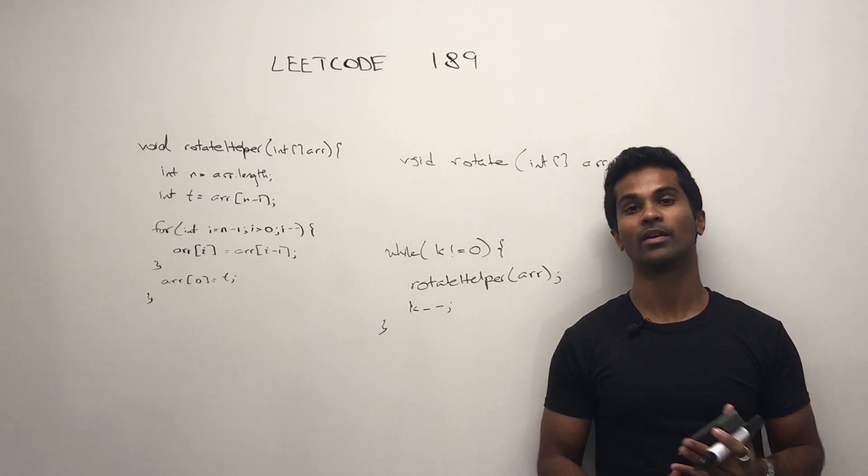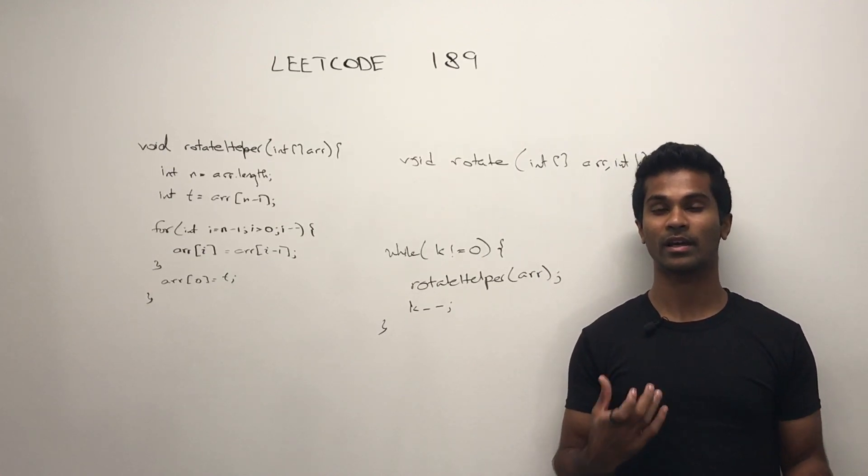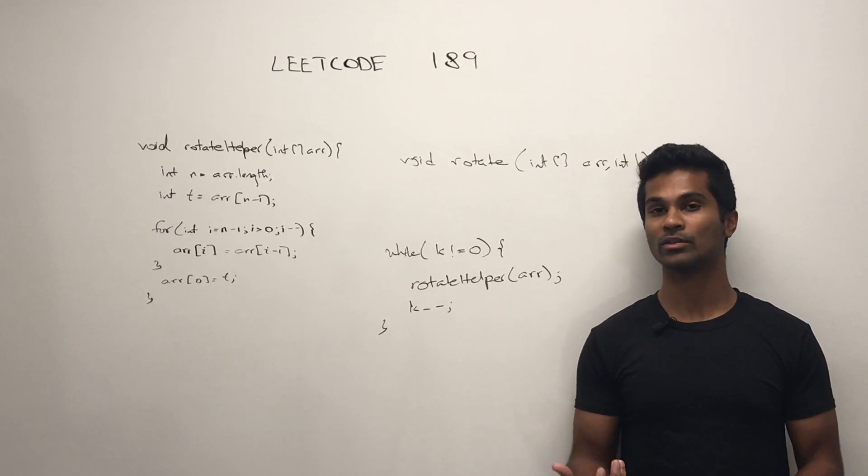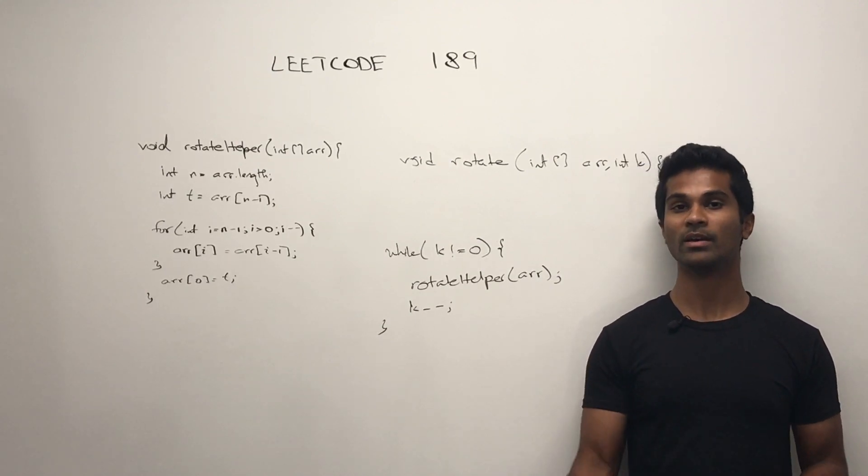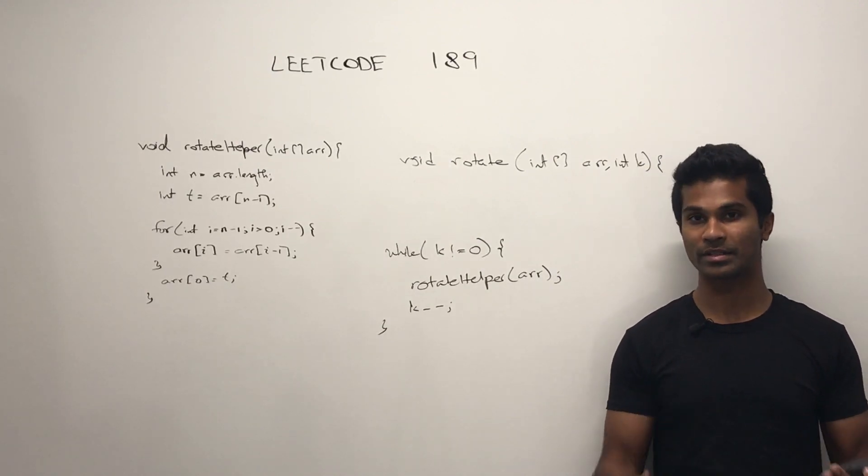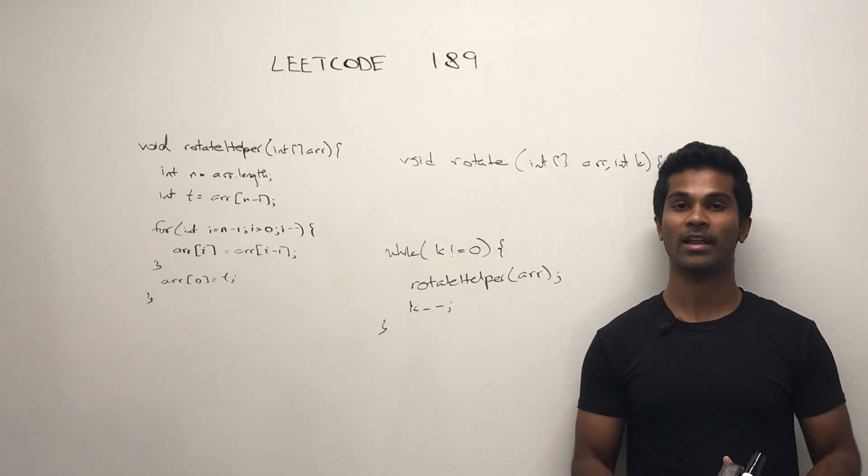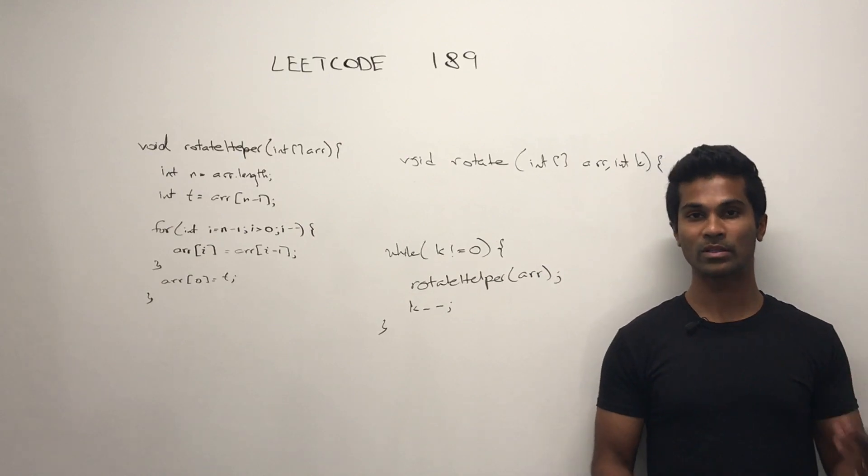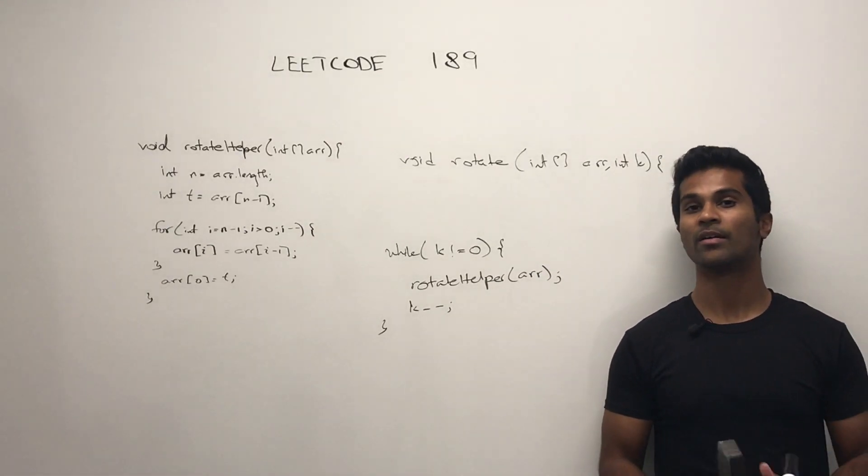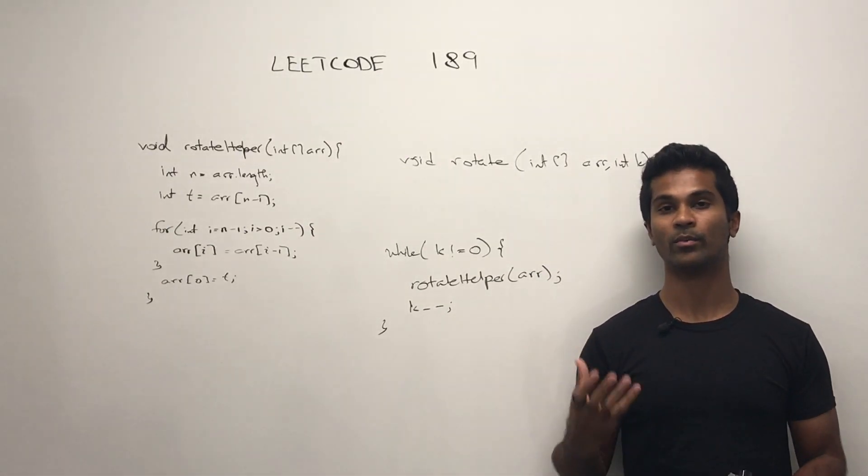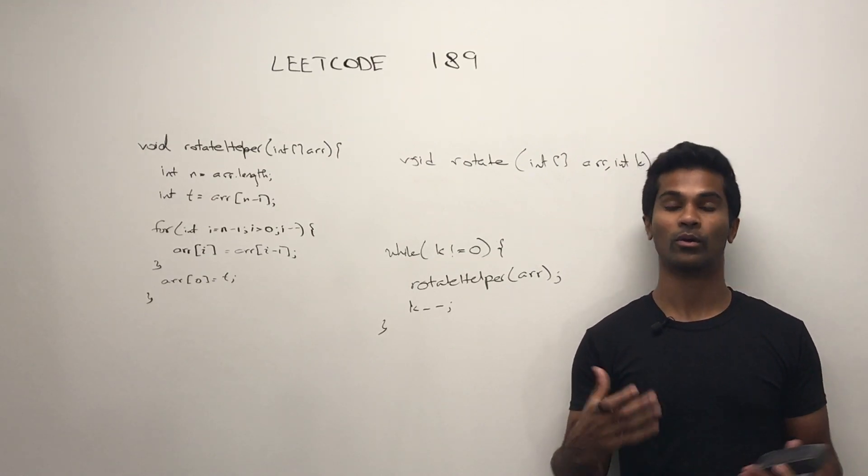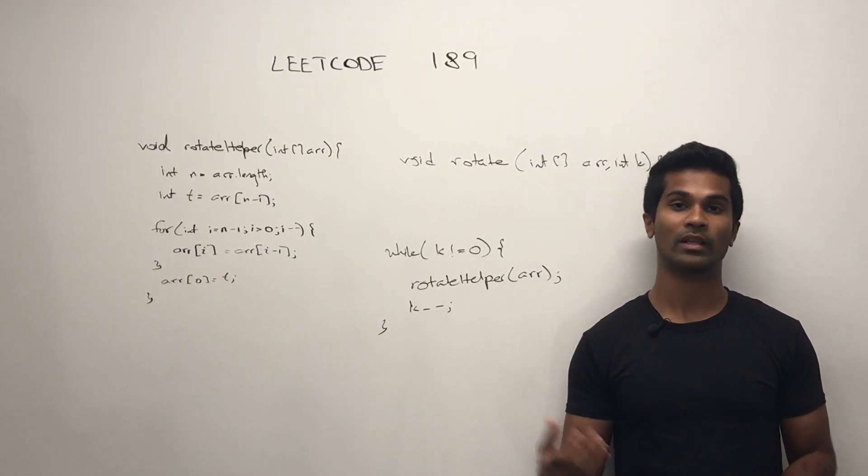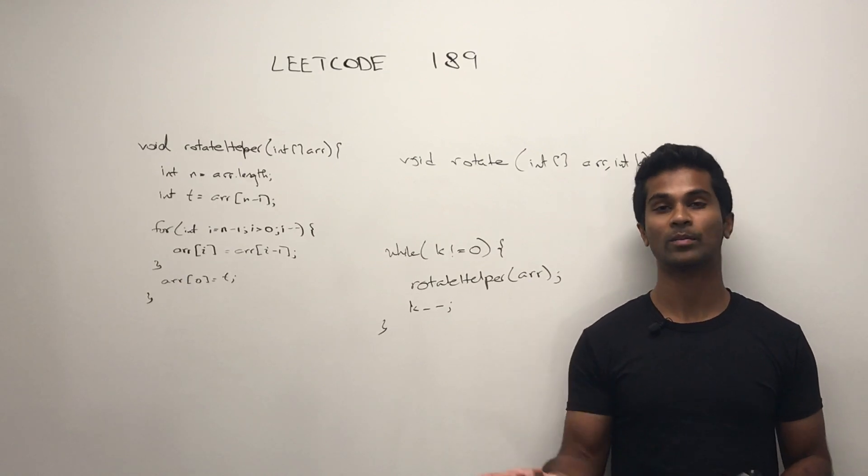Now you might be going, wait a minute, what if k is really large? Isn't that going to take a really long time? And that's right. So what we can do is actually do k modulus n where n is the length of the array and this will actually cut down our time complexity by a lot. The reason we do modulus n is because if we have an array of length n and we rotate it to the right or left n number of times we end up getting the original array.